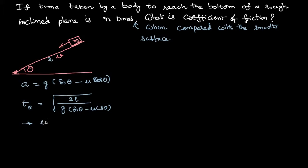If the surface is smooth, coefficient of friction is equal to zero, then the time taken to reach the bottom for the same body on the same inclined plane is root of 2L by g of sin theta.